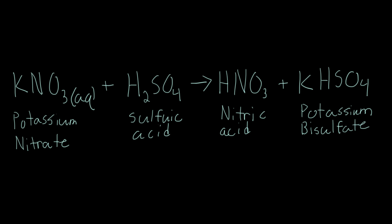The most popular way to make nitric acid is by reacting potassium nitrate and sulfuric acid, which creates nitric acid and a byproduct of potassium bisulfate.